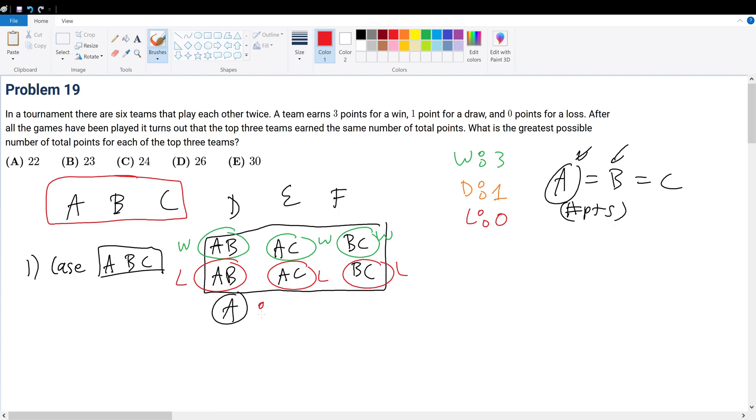What happens when we have this distribution? Well, A would win twice, or A would lose twice. So lose twice, that means plus zero. But then A would also win twice. So for the number of wins, that's two times three to get six.